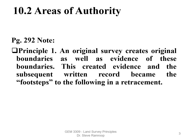Section 10.2. On pages 282 through 286, this chapter covers all of its principles — 24 principles in total — and we will cover a large majority of them. Now on page 286, Section 10.2, Areas of Authority. Principle 1: An original surveyor creates original boundaries, as well as the evidence of these boundaries — where the monuments are, bearing trees, etc. This created evidence, and also the subsequent written record, became the footsteps to be followed by the retracing surveyor.